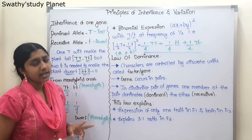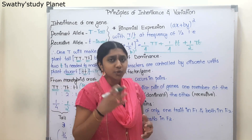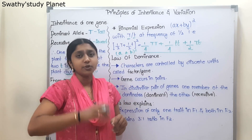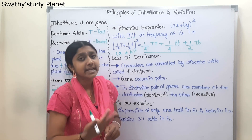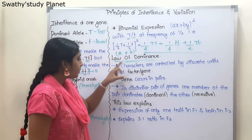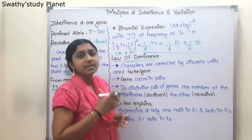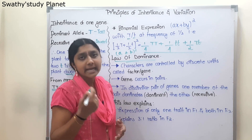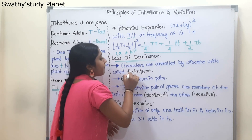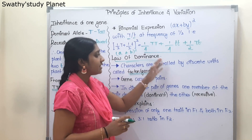The monohybrid cross satisfies two laws. Now we have two laws. This is the inheritance of one gene cross, which satisfies these laws. The first is the law of dominance. There are three important points. Characters — such as tall, color, pod shape, flower color, flower position — are controlled by factors. Factors are genes. That is the first point.